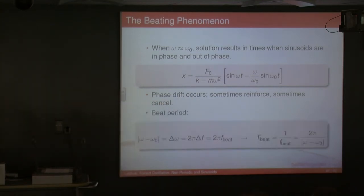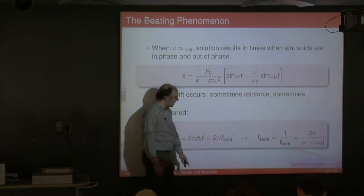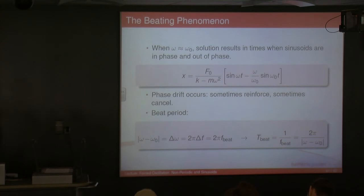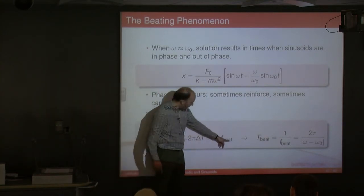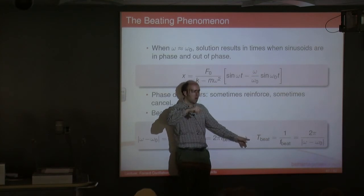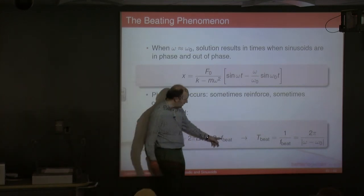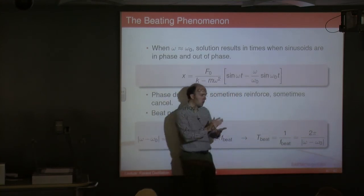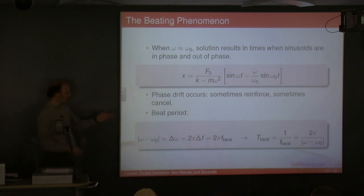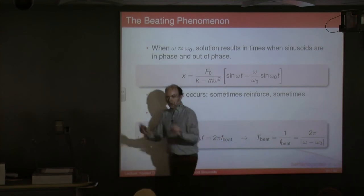To work out the period of the beat, you take the difference between the two frequencies. That difference in Hz gives you the beating frequency, and one over that difference gives you the beat period. At 256 and 257 Hz the difference is one, so the beat period is one second. When I went to 258 Hz the difference was two, so the beat period was half a second. As you increase the separation, the beat period gets smaller until you can no longer distinguish it and you end up with basically two separate tones.